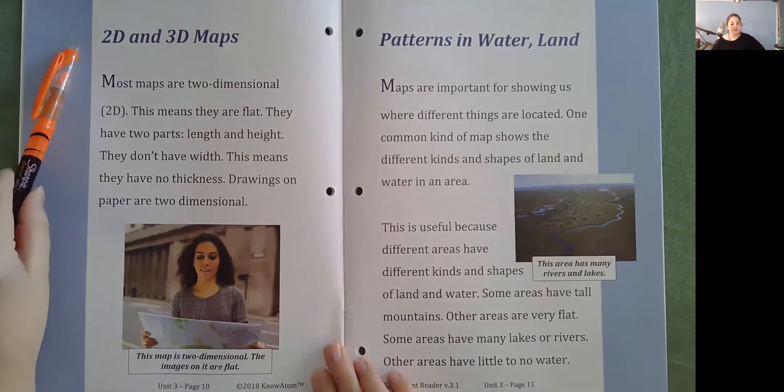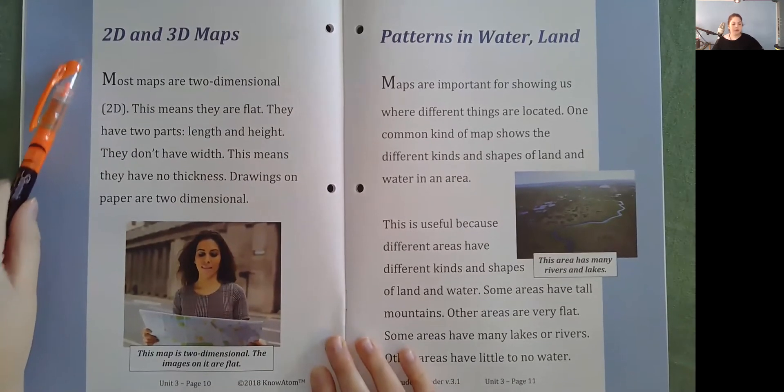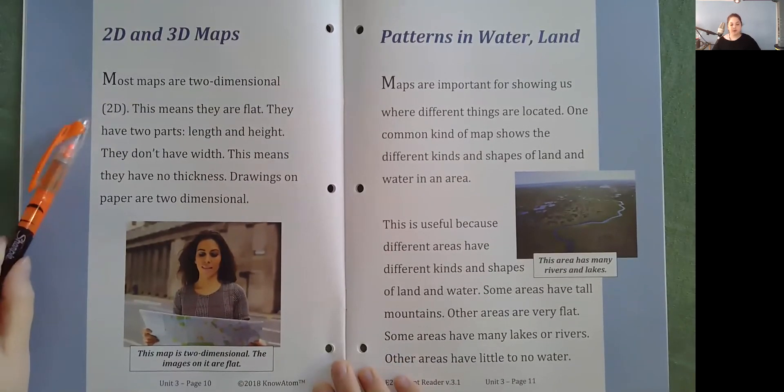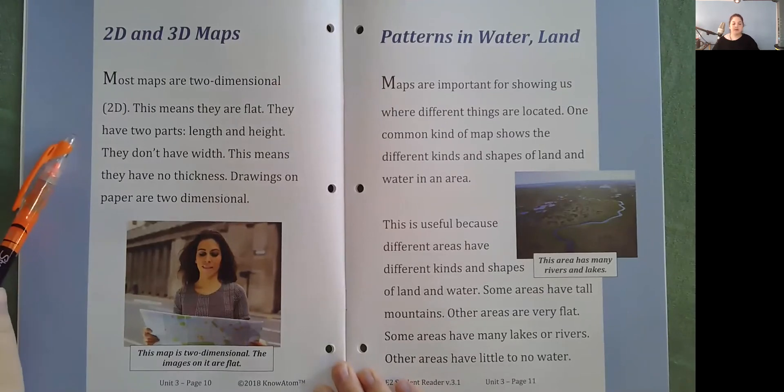2D and 3D maps. Most maps are two-dimensional, 2D. This means they are flat. They have two parts, length and height. They don't have width. This means they have no thickness. Drawings on paper are two-dimensional. This map is two-dimensional. The images on it are flat.